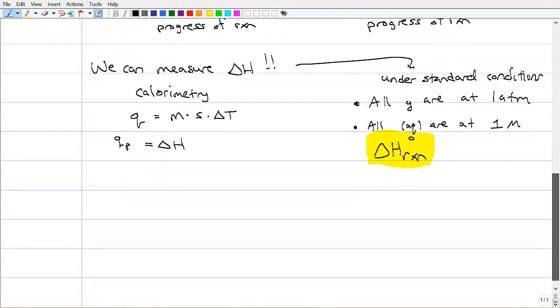There is an interesting method of doing calculations of delta H. We can use what are called standard formation. So this is the standard formation data. It's really called Hess's law. You may not remember that, but Hess's law.